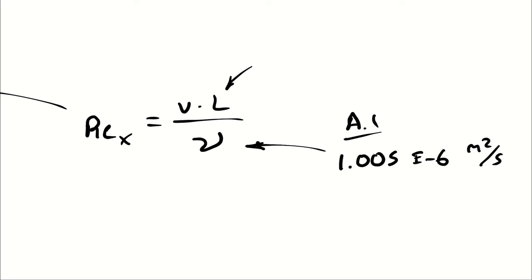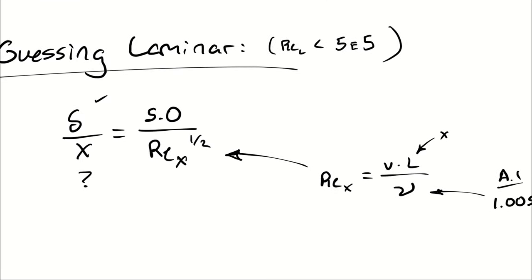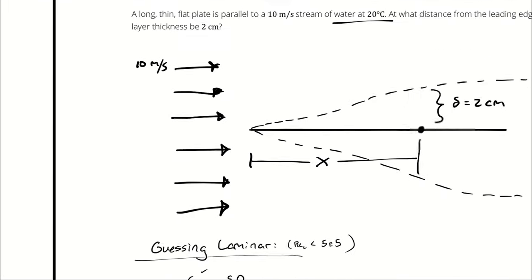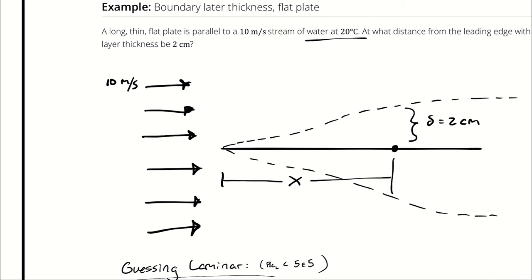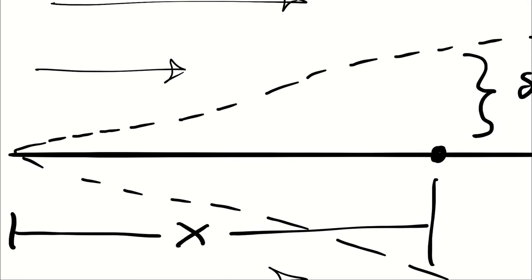The length here is actually x, because we are using the Reynolds number where x is the characteristic length. For the velocity, we are using what's called the free stream velocity, which is the velocity of the flow around the boundary layer — that's 10 meters per second. Remember that inside the boundary layer we have a lower velocity that increases up to the free stream velocity.